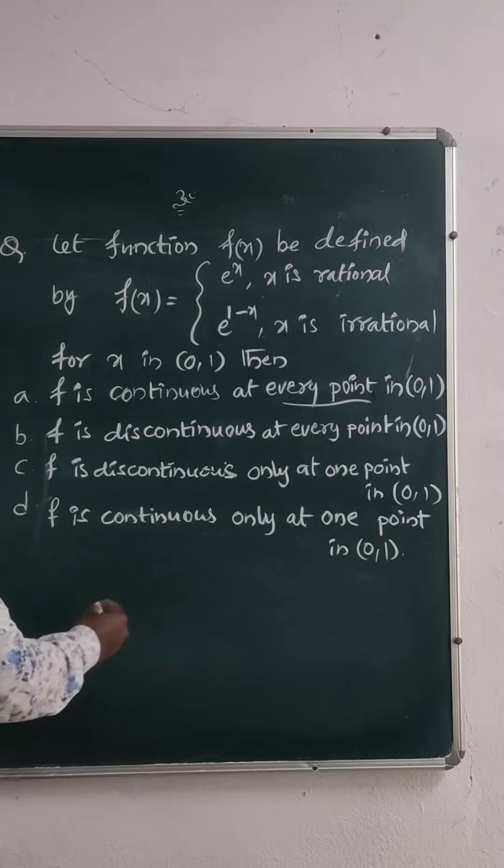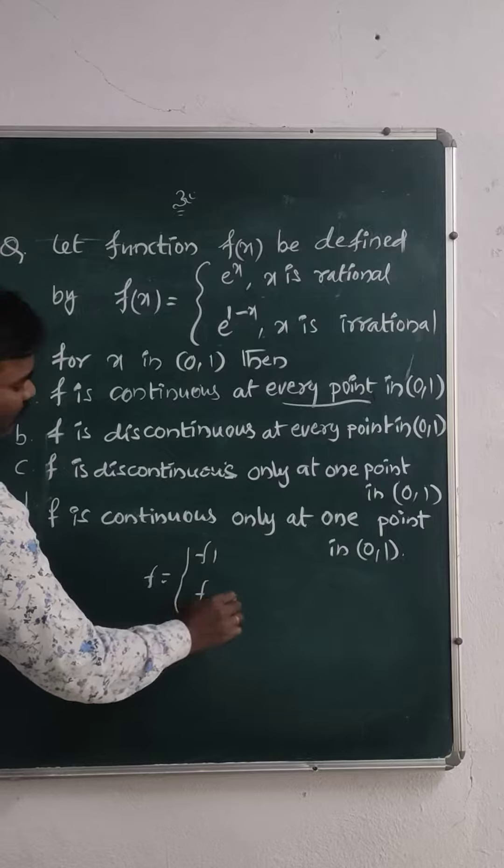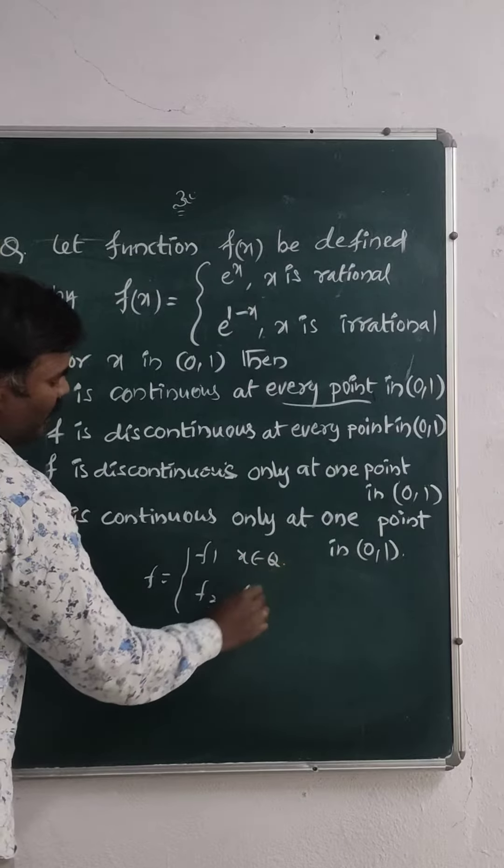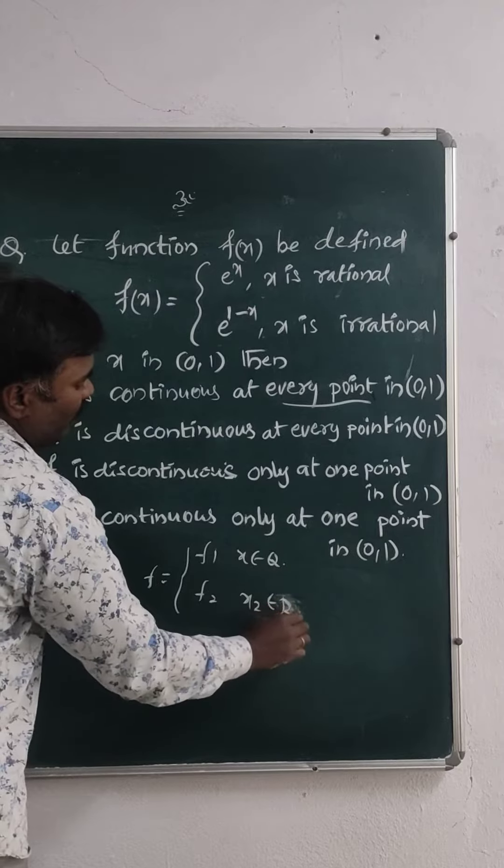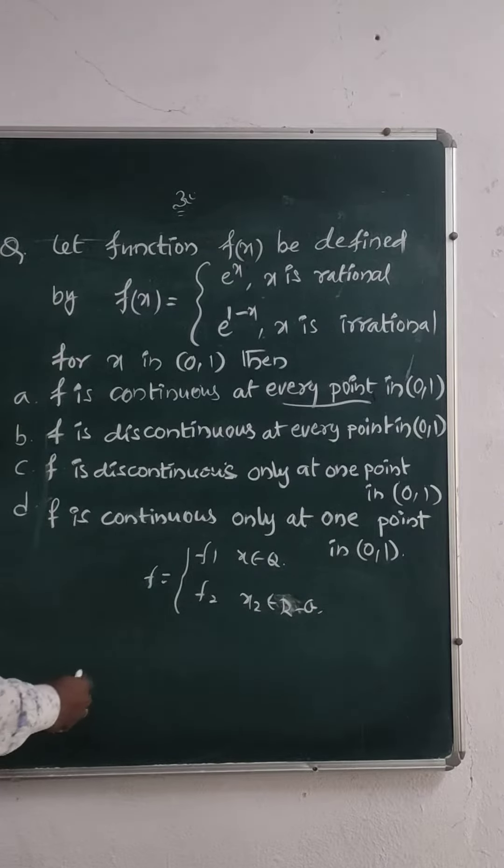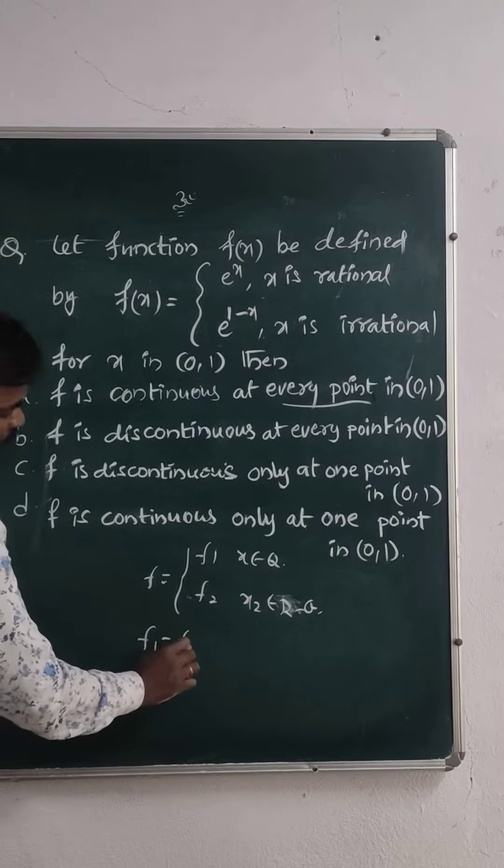Friends, you observe the short trick is what? Suppose the function f is divided like f1 and f2, f1 is for rational, f2 is for irrational. Then how can you verify this function is continuous? Means both you have to equate, f1 equals f2 you equate, then you will get x value.